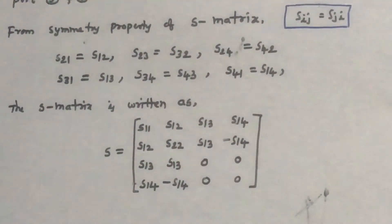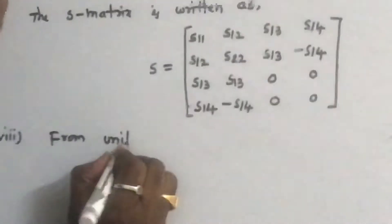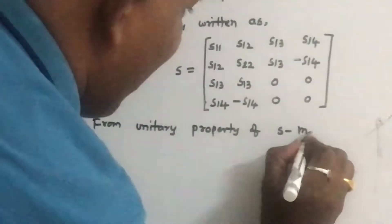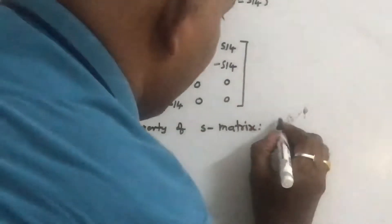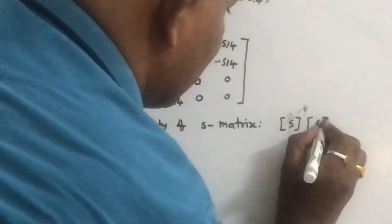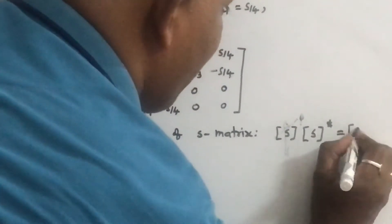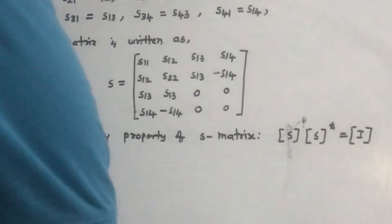From the unitary property of the S-matrix: the S-matrix multiplied by its complex conjugate matrix is equal to the identity matrix. Now substitute S and S* and equate to the identity matrix.